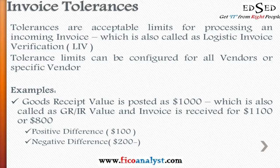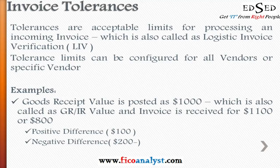These tolerances can be configured for all vendors or for a specific vendor. For example, if the goods receipt value is posted as $1,000 — also called the GR/IR value — and the invoice is received for $1,100 or $800, then $1,100 represents a positive difference of $100, and $800 represents a negative difference of $200.